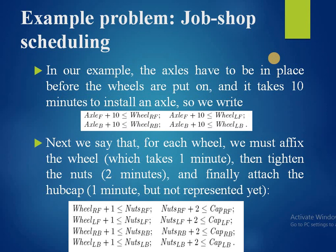For each wheel, we must fix the wheel (1 minute), then tighten the nuts (2 minutes), and finally attach the hubcap (1 minute). This gives constraints such as: wheel_rf + 1 ≤ nuts_rf, nuts_rf + 2 ≤ cap_rf, wheel_lf + 1 ≤ nuts_lf, nuts_lf + 2 ≤ cap_lf, wheel_rb + 1 ≤ nuts_rb, and nuts_rb + 2 ≤ cap_rb.